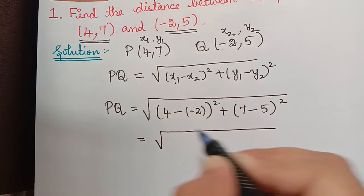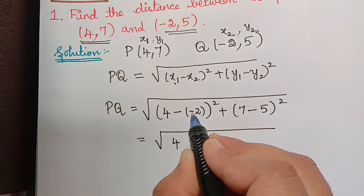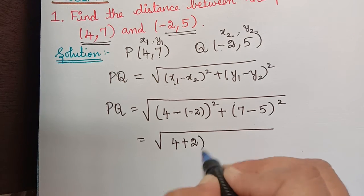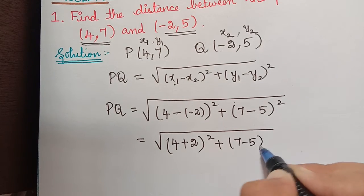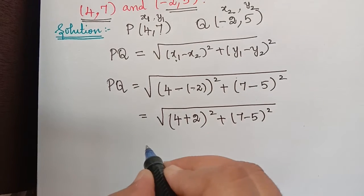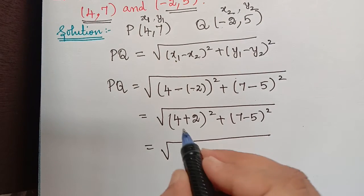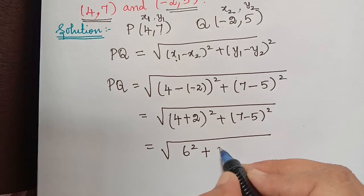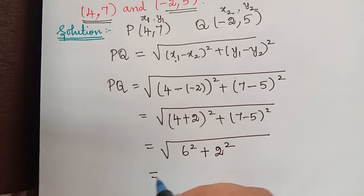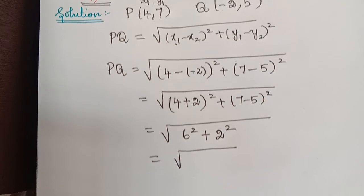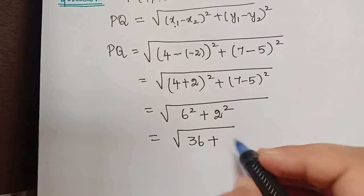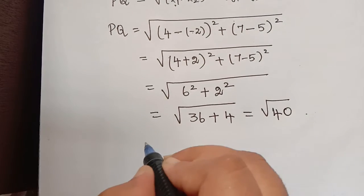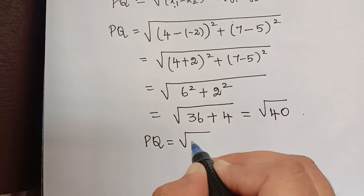So let us simplify this. 4 minus (minus 2) — since minus multiplied by minus becomes positive — gives us 4 plus 2, the whole square. Further simplifying: 4 plus 2 is 6, so we have 6 squared plus 2 squared, which is 36 plus 4, giving us square root of 40.